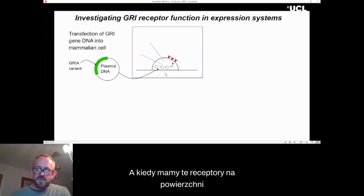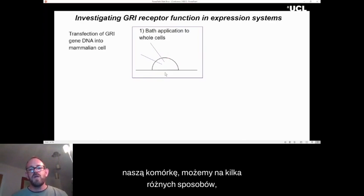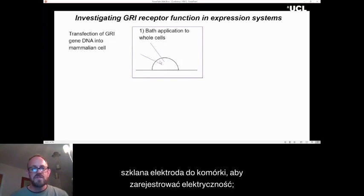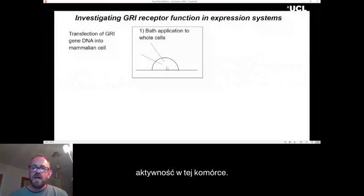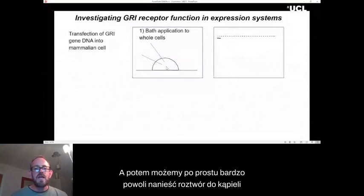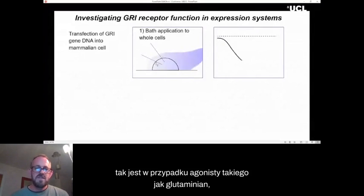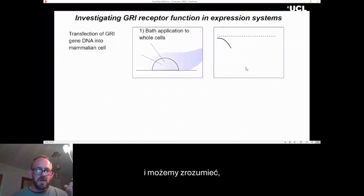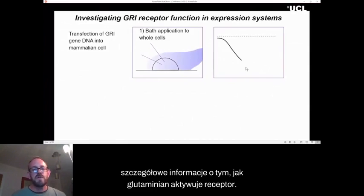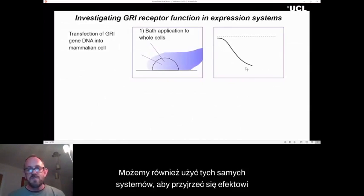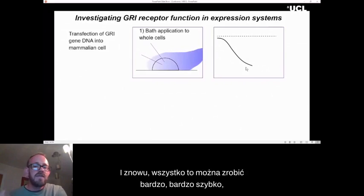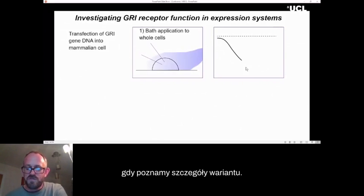Once we've got these receptors on the surface of our cell, there's a couple of different ways we can examine them. So a more traditional way would be we put a glass electrode into the cell to record the electrical activity in that cell. And then we can just very slowly apply solution to the bath. In this case, this is an agonist like glutamate. As the concentration increases, the current increases, and we can start to begin to understand details about how glutamate is activating the receptor. We can also use these same systems to look at the effect of drugs, whether they be potentiators or inhibitors. And again, this can all be done very quickly once we find out the details of the variant.